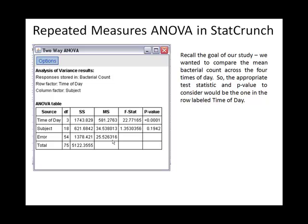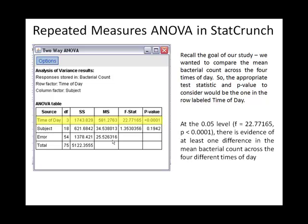The goal of our study was to compare the mean bacterial count across the four times of day. From all the F statistics and p-values, we need to pick the appropriate one — since we want to compare across our four times, we use the F statistic and p-value in the row labeled time of day. The F statistic was 22.7, with a p-value less than .0001, which results in the conclusion that we should reject the null hypothesis. There is evidence of at least one difference in mean bacterial count across the four times of day.